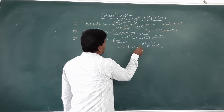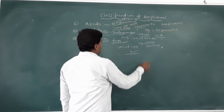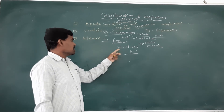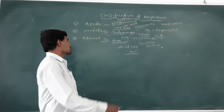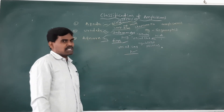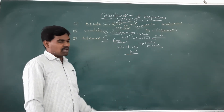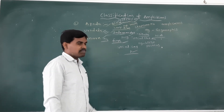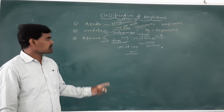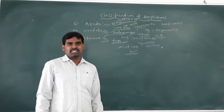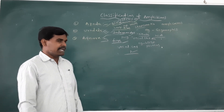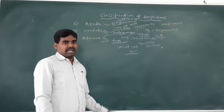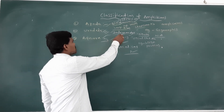Vocal cord is present for sound producing. Sexes are separate. Fertilization is external. Development is indirect with a larval stage. Examples: Rana, Tigrina, Hyla, etc. These are frogs — Rana Tigrina, Hyla are examples of Anura.